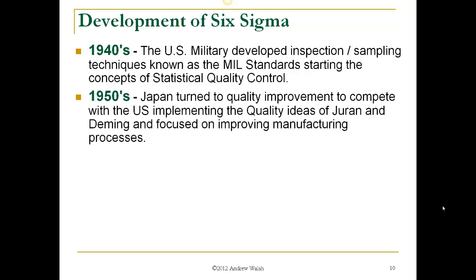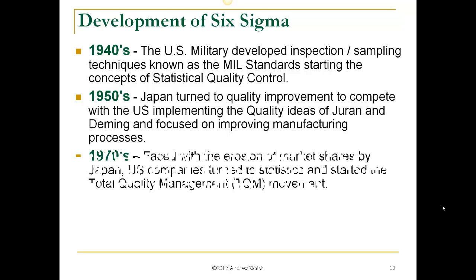In the 1950s, after the war, Japan was turning to improving its quality to compete with the United States, and they started implementing the quality ideas of Dr. Juran and Deming, focusing on improving the manufacturing process to make superior products. In the 1970s, faced with the erosion of market shares by Japan, many U.S. companies started turning to statistics and total quality management as the answer to their quality problems.